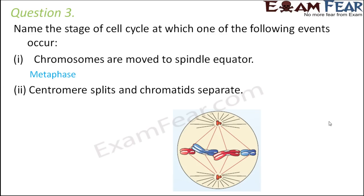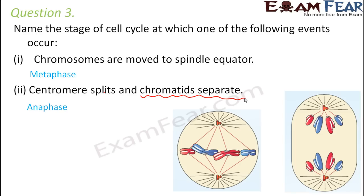Centromeres split and chromatids separate. When we talk about chromatids separating, we generally talk about mitosis, because in meiosis 1 there is no separation of chromatids — however, in meiosis 2 there is. So when the chromatids separate from each other just after metaphase, that is during anaphase — specifically anaphase of mitosis or anaphase 2 of meiosis 2.